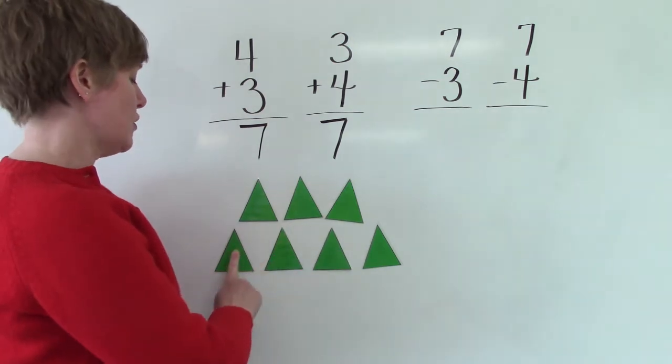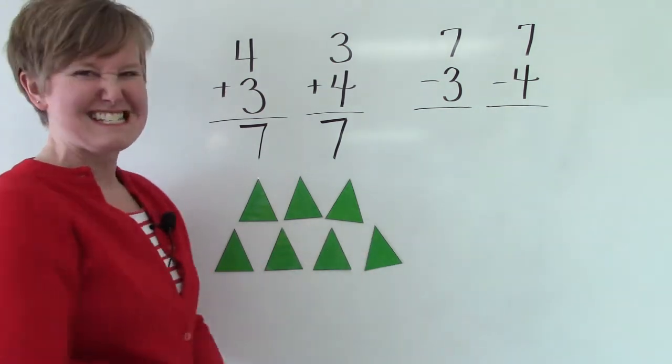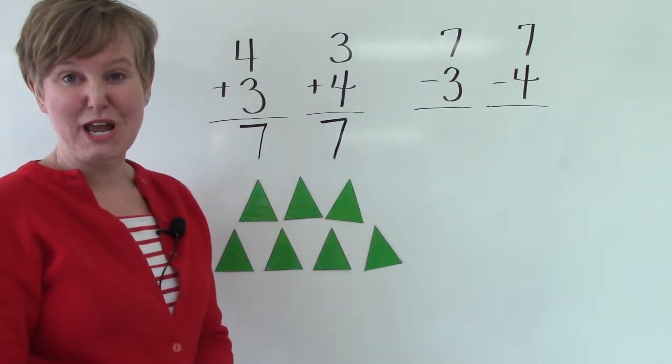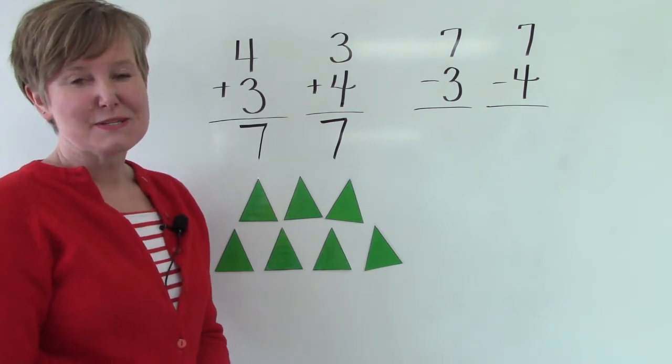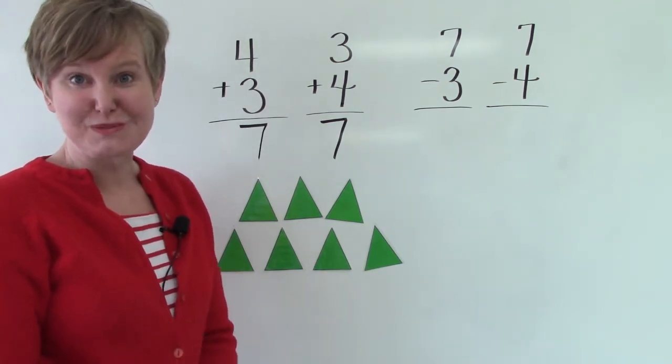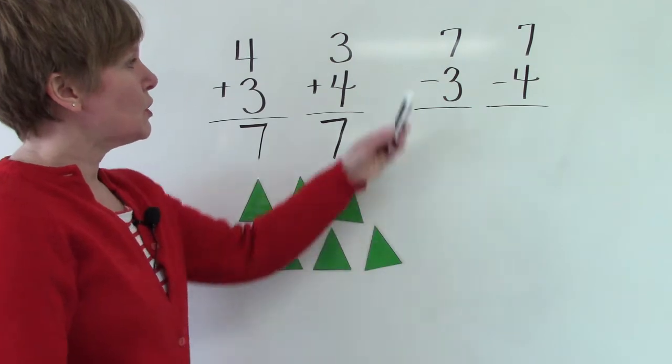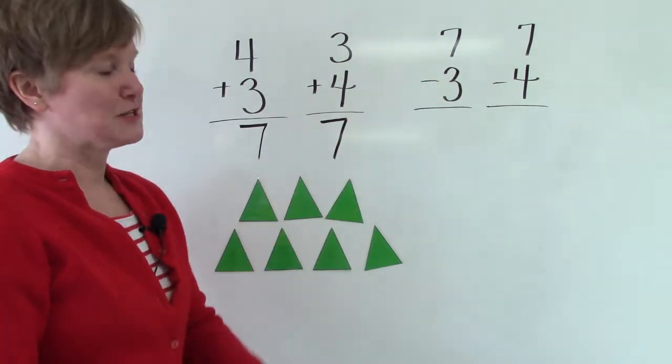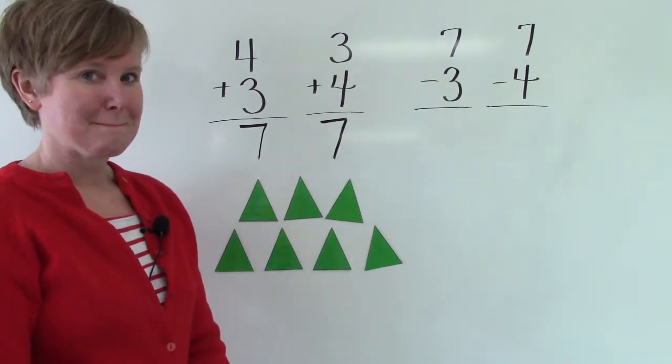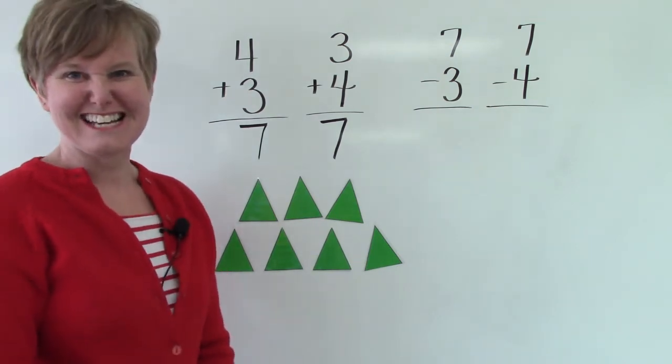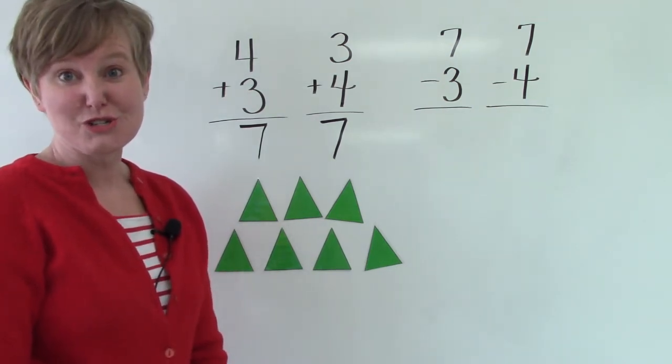1, 2, 3, 4, 5, 6, 7. We have 7 triangles on the board. So let's see if they'll help us as we subtract. We have 7 and we're going to take 3 away. I bet you you already know what the answer is. But let's just use our triangles.